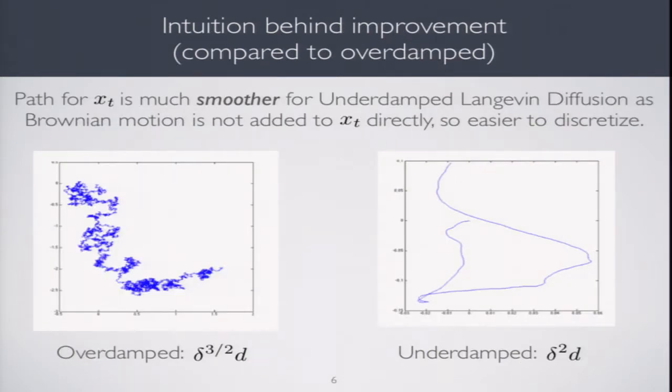The intuition for the quadratic improvement is as follows. In underdamped Langevin diffusion, the most problematic part in discretization, the thing most difficult to anticipate, is always ∇u of x. Because your function is convex and smooth, but otherwise arbitrary. Because of the smoothness assumption, the approximation of the discretization error in ∇u of x is bounded by the discretization error in anticipating your position. In both overdamped and underdamped analysis, the discretization error is bottlenecked by the error in your position approximation.